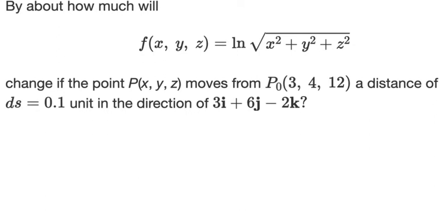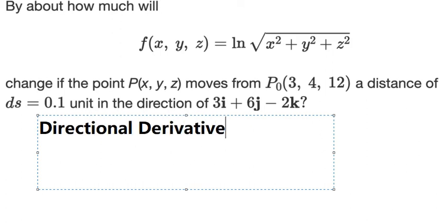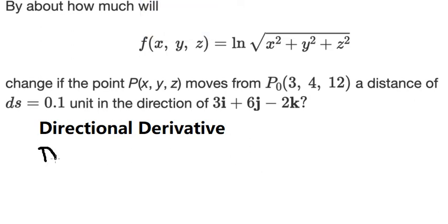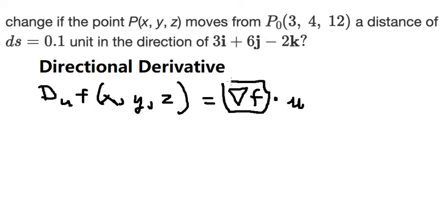First we need to find the directional derivative. The formula is: D_u of f(x,y,z) equals the gradient of the function dot product with the unit vector. This part is the gradient, this is the unit vector, and we take their dot product.